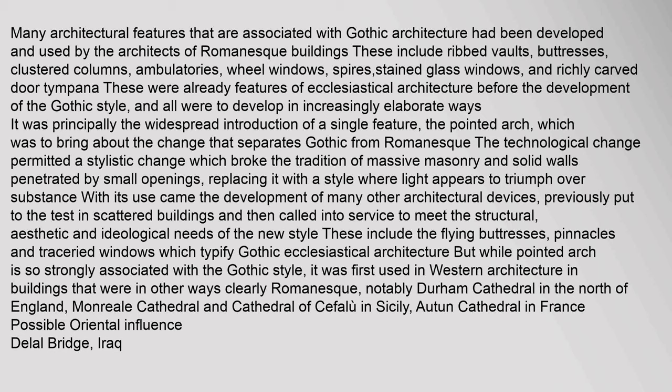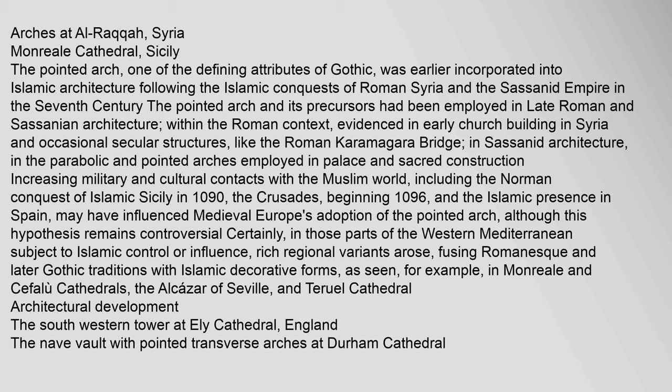The pointed arch, one of the defining attributes of Gothic, was earlier incorporated into Islamic architecture following the Islamic conquests of Roman Syria and the Sassanid Empire in the 7th century. The pointed arch and its precursors had been employed in late Roman and Sassanian architecture — evidenced in early church building in Syria and occasional secular structures like the Roman Karamagara bridge, and in Sassanid architecture in the parabolic and pointed arches employed in palace and sacred construction. Increasing military and cultural contacts with the Muslim world, including the Norman conquest of Islamic Sicily in 1090, the Crusades beginning 1096, and the Islamic presence in Spain, may have influenced medieval Europe's adoption of the pointed arch, although this hypothesis remains controversial.